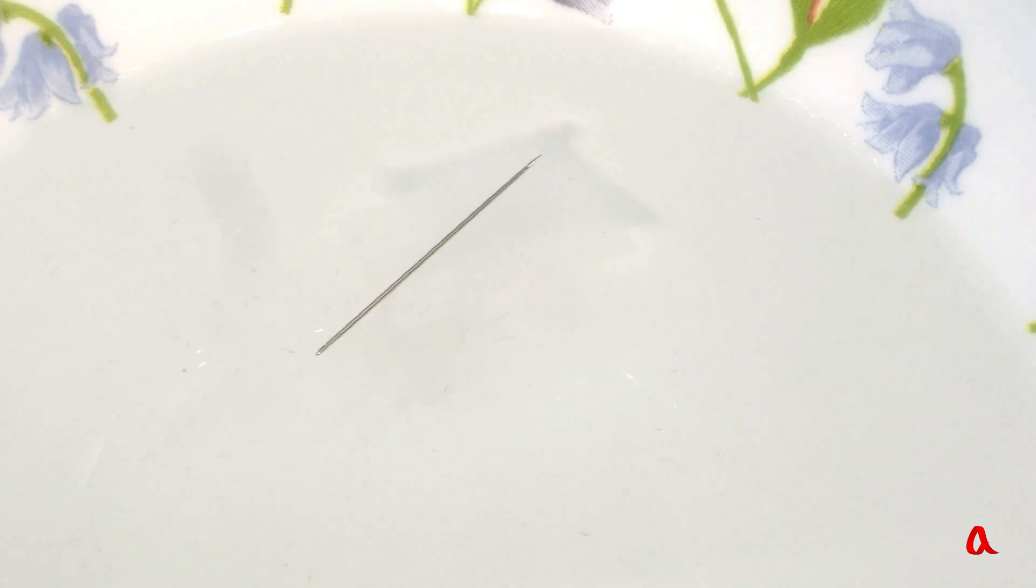We can do the same experiment with a needle. For it to lie smoothly on the surface, we put it on a floating piece of blotting paper. We carefully sink the paper and the needle continues to stay on the surface.